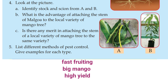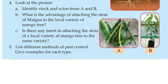We have discussed this briefly. If you add a local variety of mango and graft it, you can get early fruiting, flowering, sweet and large mangoes, and high yield. Now, the next question: list different methods of pest control and give examples for each type.